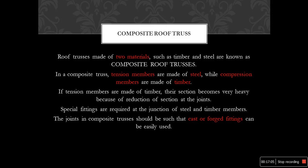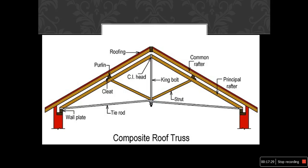A composite roof truss consists of two materials — steel and timber. In a composite truss, tension members are made of steel and compression members are made of timber or wood. If tension members were made of timber, their sections would become very heavy because of the reduction in section size at the joints. This is an example of a composite roof truss showing the tie rod and strut with purlin roofing.